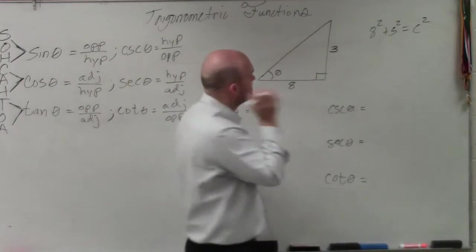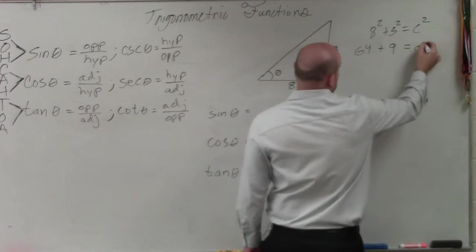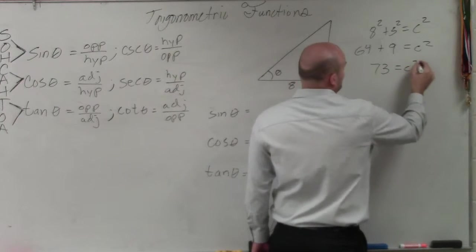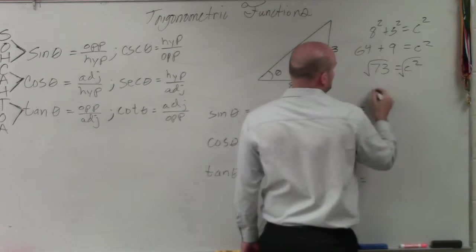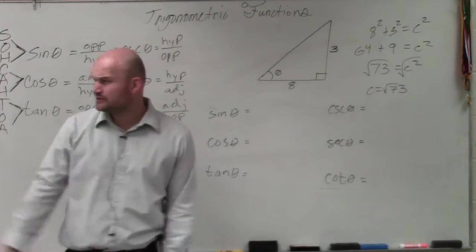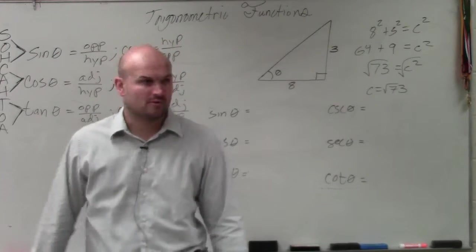So therefore, 8 squared is going to be 64 plus 3 squared, which is 9, equals c squared. 64 plus 9 is going to be 73 equals c squared. Square root, square root, c equals the square root of 73. Can I simplify the square root of 73? Do I have any square numbers that divide into 73? Not that I'm aware of.